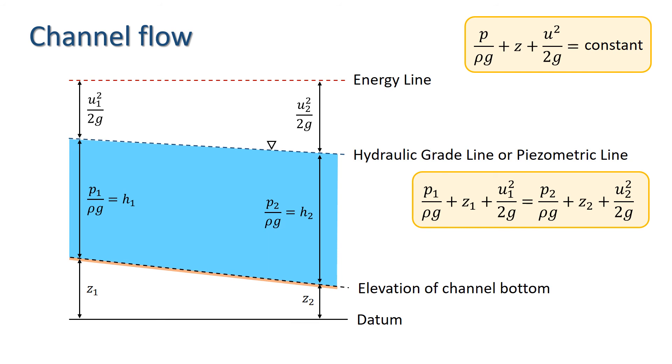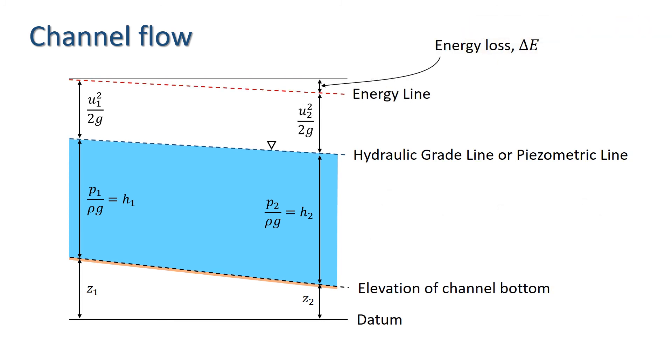In practice, we have energy losses, and these are taken account of by adding a loss term delta E to the right hand side of the equation. This results in the energy line having a slope as shown here.